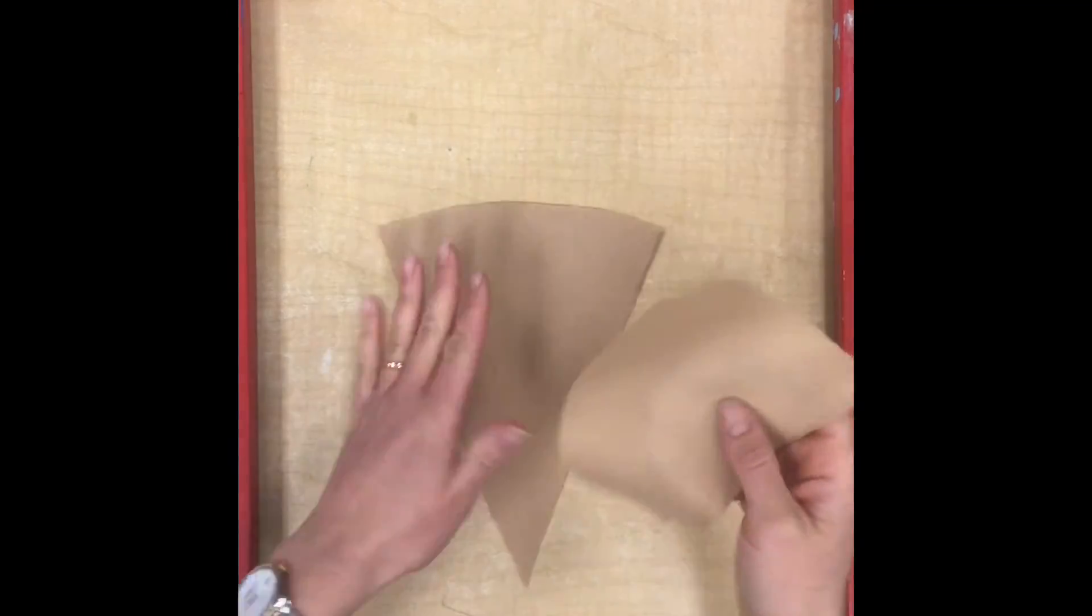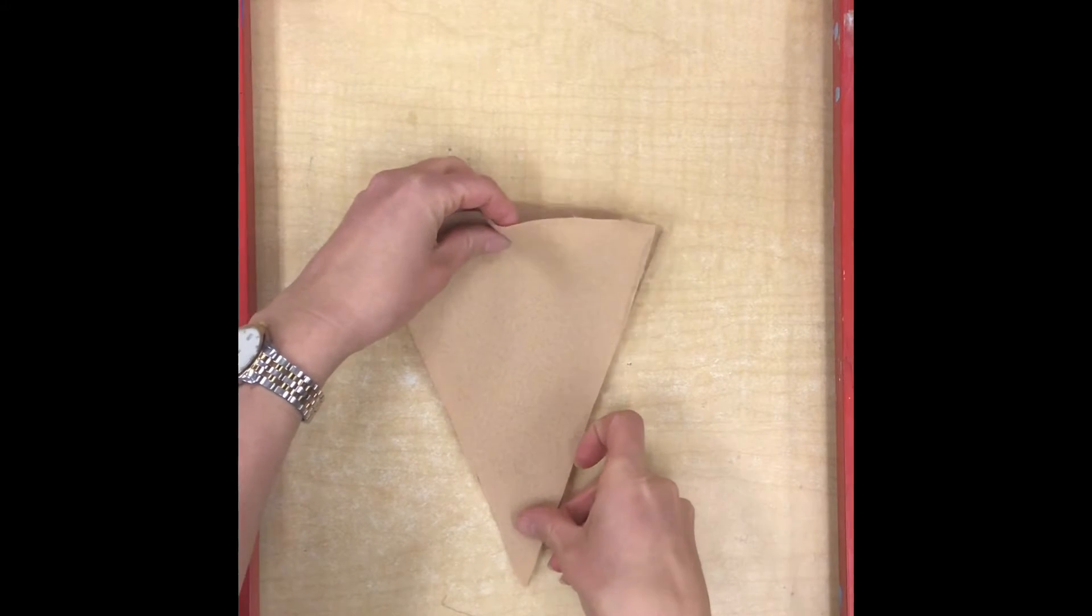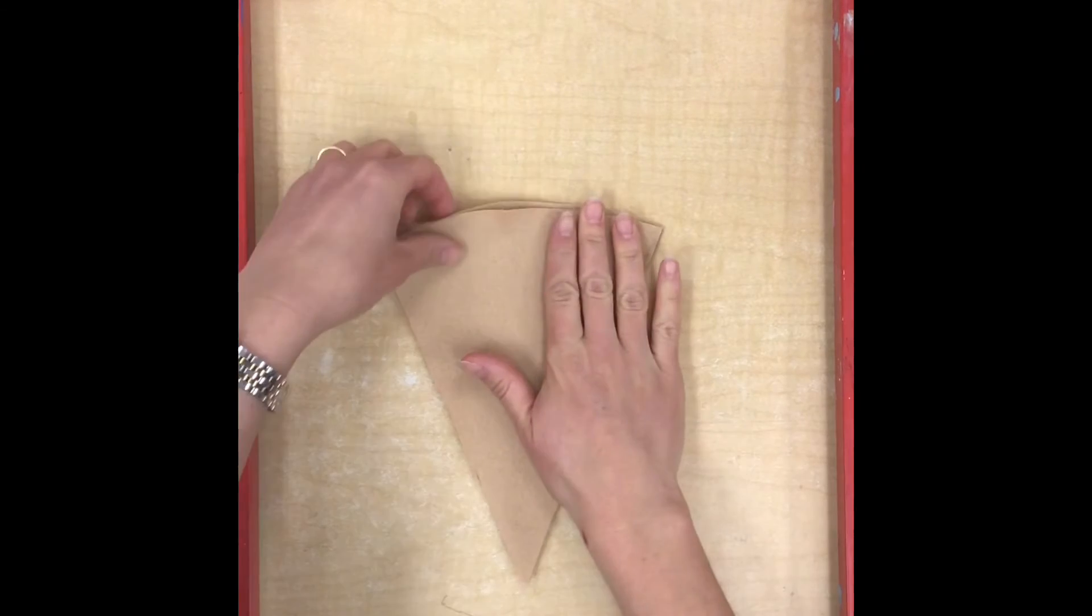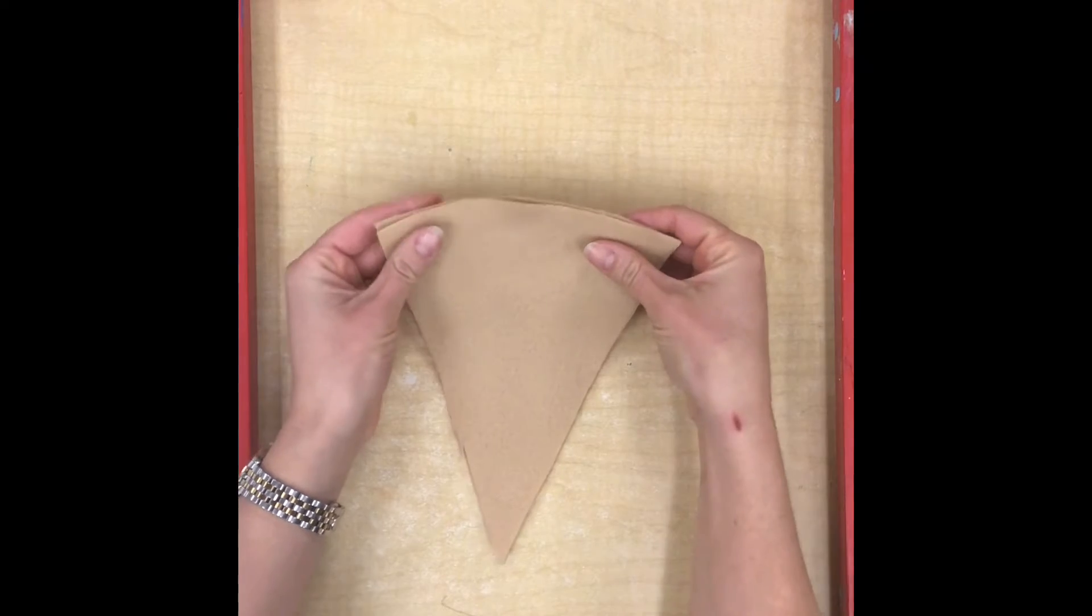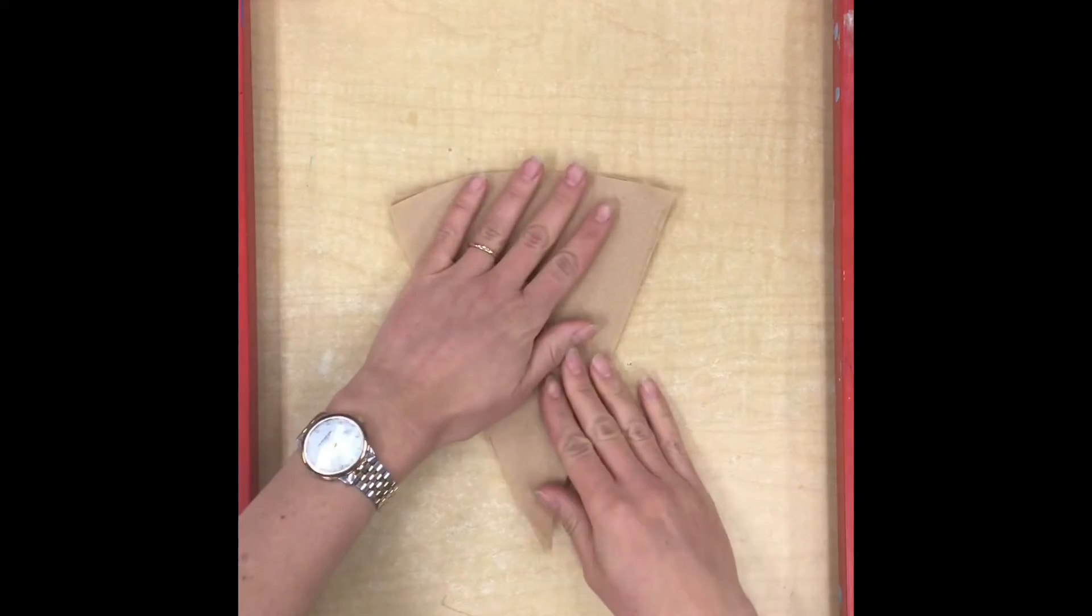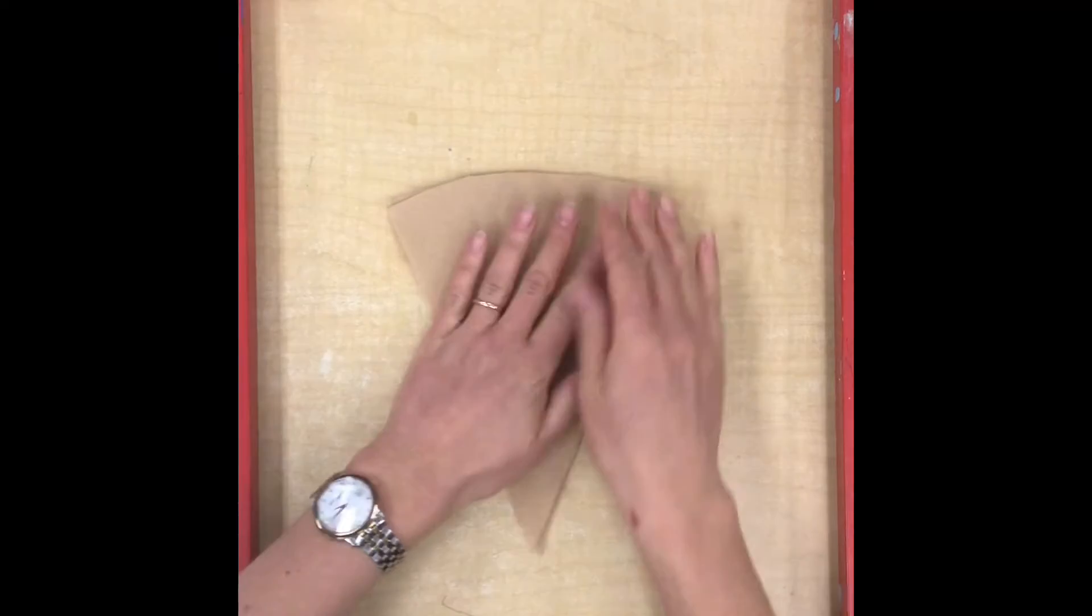Now I'm going to stack my two triangle pieces exactly on top of each other. They should be the exact same size or at least pretty close so I'm just going to try to get them lined up the best I can.